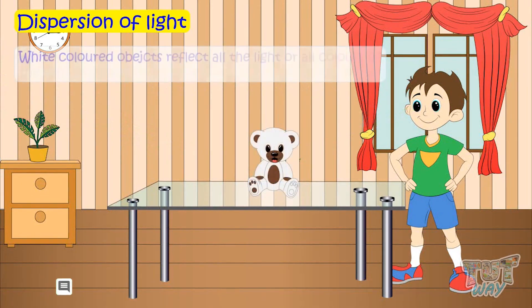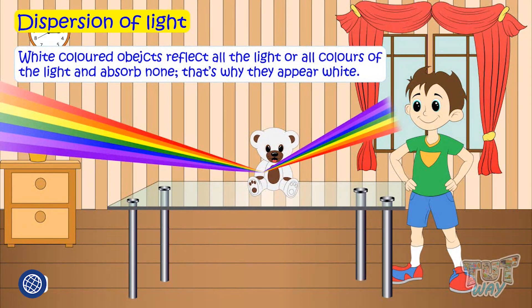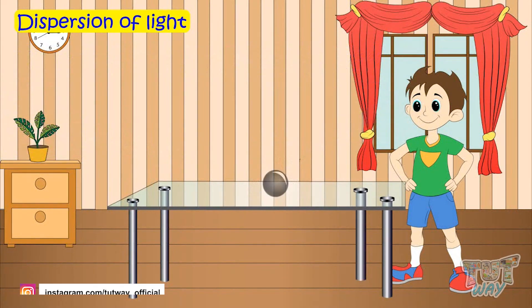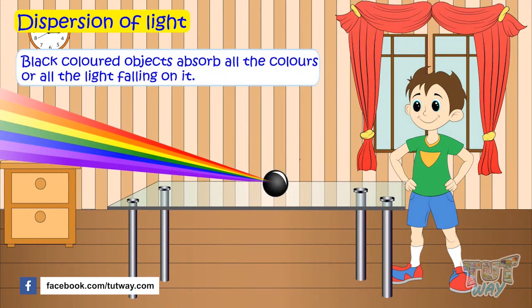White color objects reflect all the light or all colors of the light and absorb none. That's why they appear white. Black color objects absorb all light or all colors of the light and reflect none, and so appear black.